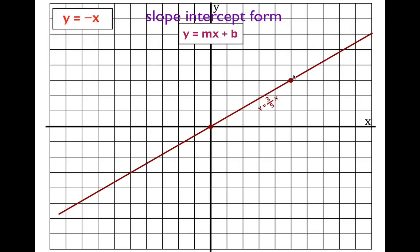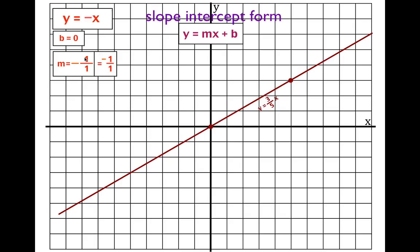This line is y equals minus x. Once again, there's nothing after the x, so the y-intercept is zero. The slope has a number in front of the x — it's minus one. I always tell my students: when the slope is given as a whole number and not a fraction, write it as a fraction so you can see rise over run. Put the number over one: it's minus one over one. If it's negative, put the negative sign on the numerator. So the slope equals minus one over one — the rise is minus one, and the run is positive one.